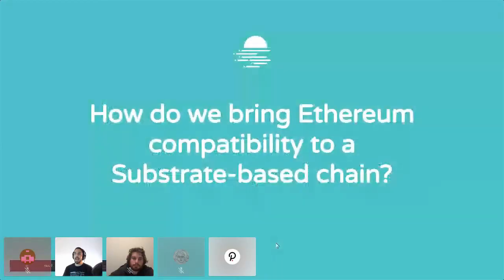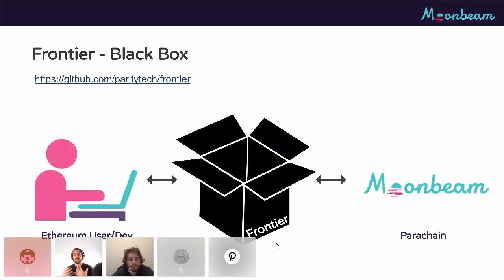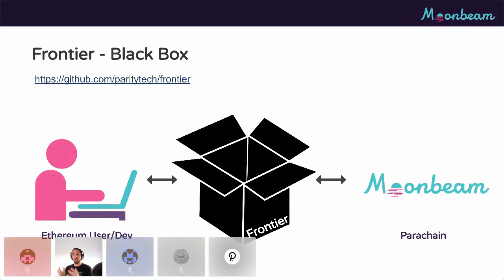How do we bring Ethereum compatibility to a Substrate-based chain? The answer is Frontier. My favorite definition of Frontier is the black-box definition: if you're an Ethereum user or developer using MetaMask or Truffle, you can see Frontier as a black box — the middleware between you and the parachain, which in this case is Moonbeam. The end user using these Ethereum tools doesn't really feel a difference, and you'll actually notice this when we go into our test drive.